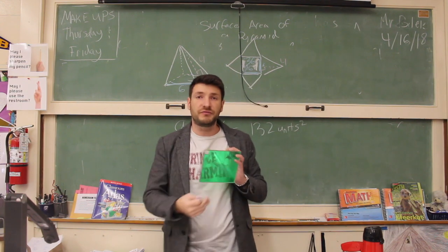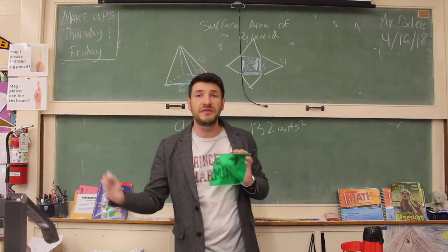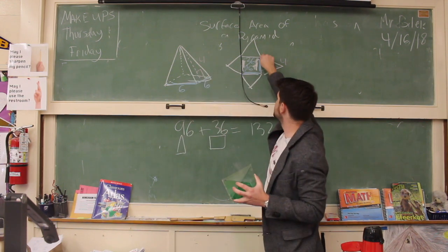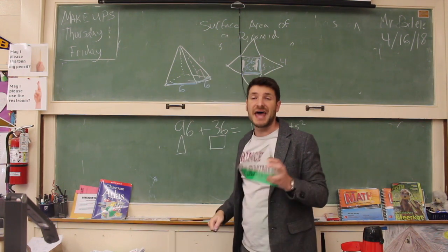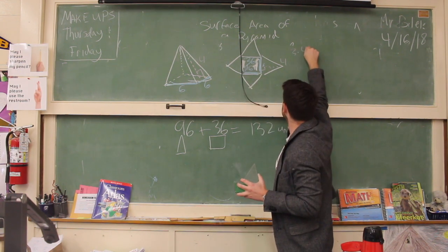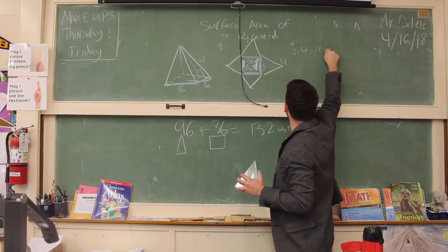Now, if all the triangles are equal, we have everything we need to find the surface area. All we need to do is take this triangle with a base of 6 and a height of 4. Well, let's see here. One half times 6 is 3. 3 times 4 is 12 units squared.